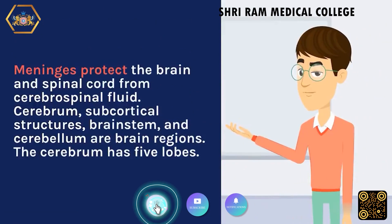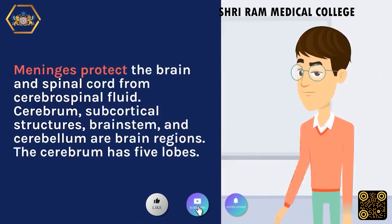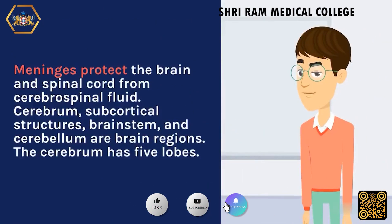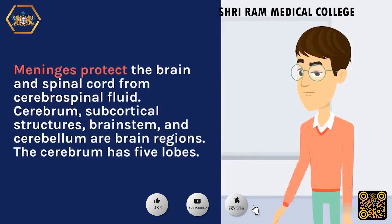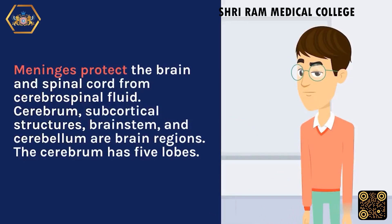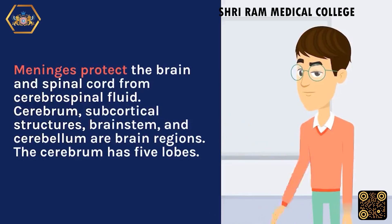Neuroanatomy also addresses protection of the brain and spinal cord via cerebrospinal fluid. The cerebrum, subcortical structures, brain stem, and cerebellum are brain regions. The cerebrum has five lobes.